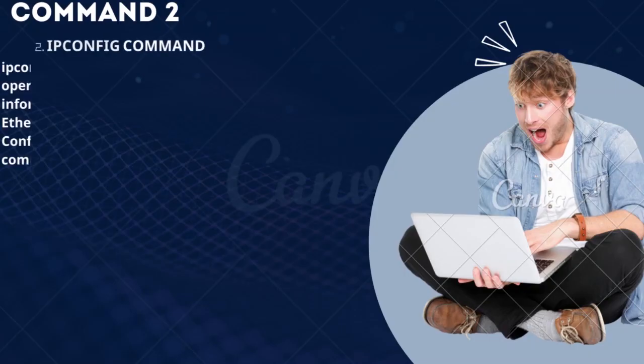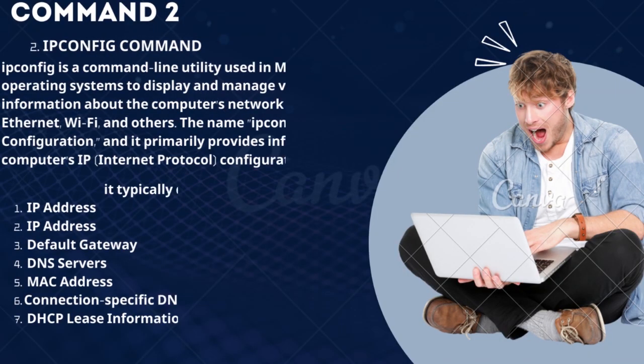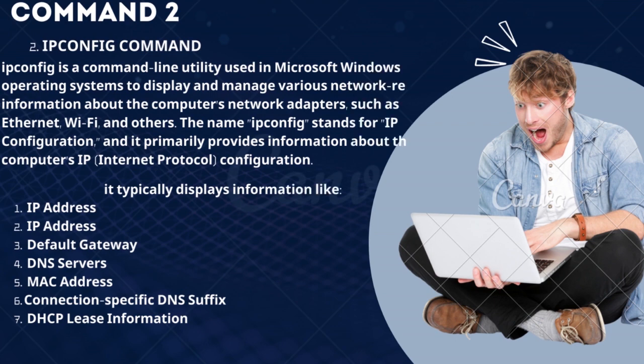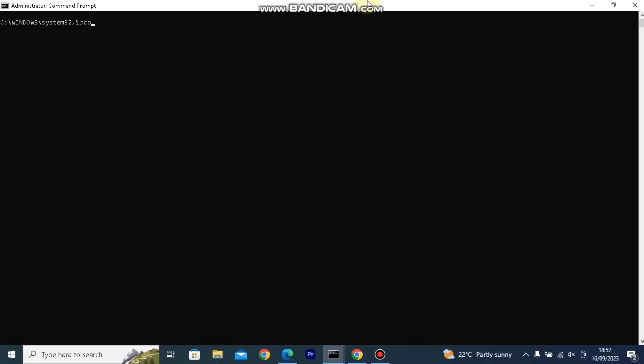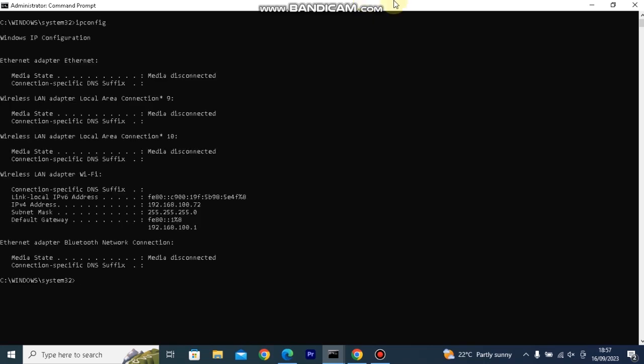Command 2: IP Protocol Configuration. IP Protocol Configuration is a command-line utility used in Microsoft Windows operating systems to display and manage various network-related information about the computer's network adapters, such as Ethernet, Wi-Fi, and others. It primarily provides information about the computer's IP (Internet Protocol) configuration.